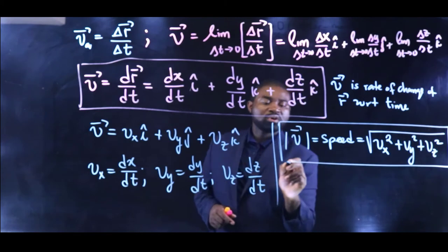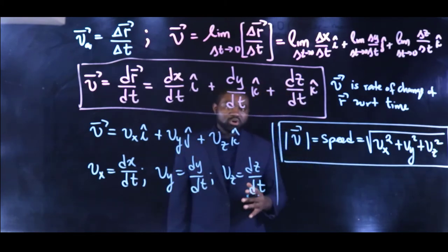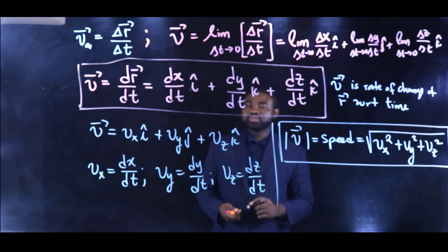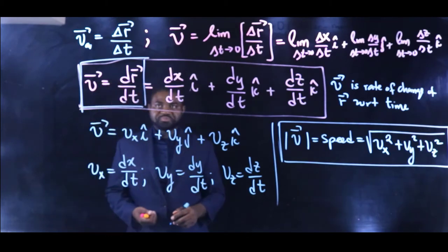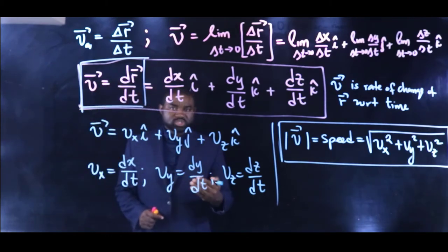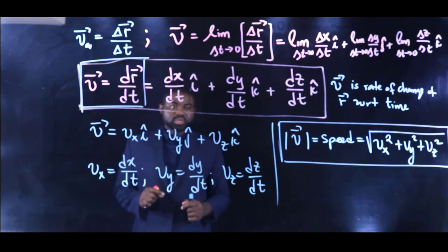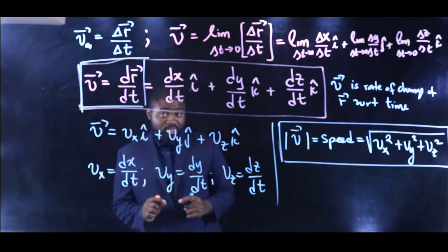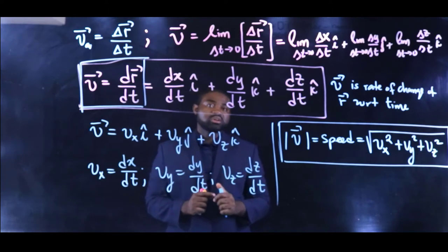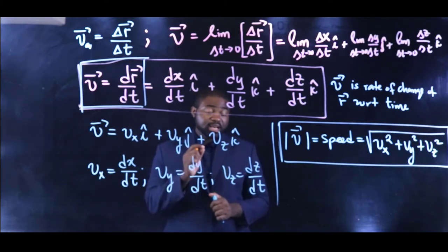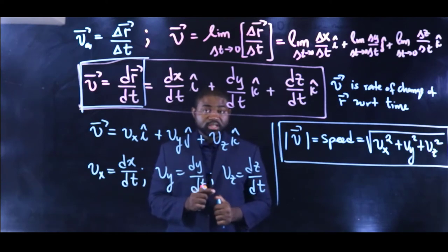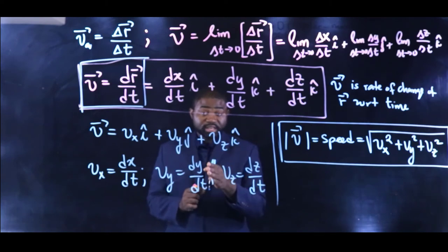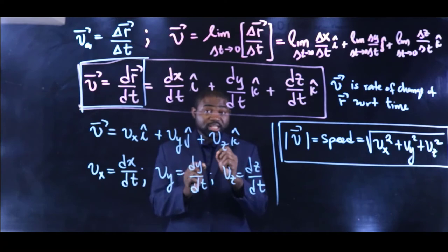Now, what about the direction? This is really crucial. Remember that V is the derivative of r with respect to t. In math, the derivative of position with respect to time defines a line tangent to the path at that particular point. That means the direction of instantaneous velocity is simply a line tangent to the path at that point in the direction of motion.